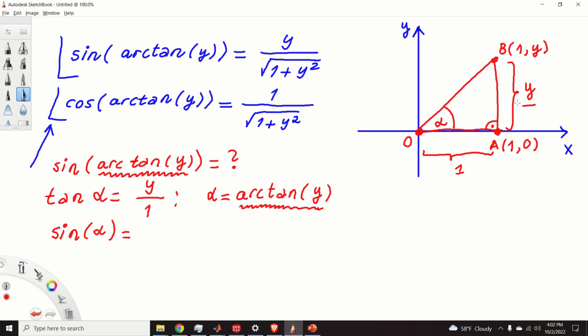we can observe that sin(alpha) is equal to y over the distance from O to B. And, from Pythagoras' theorem, we know that the distance from O to B is the square root of 1 plus y squared. So, sin(alpha) is equal to y over the square root of 1 plus y squared.